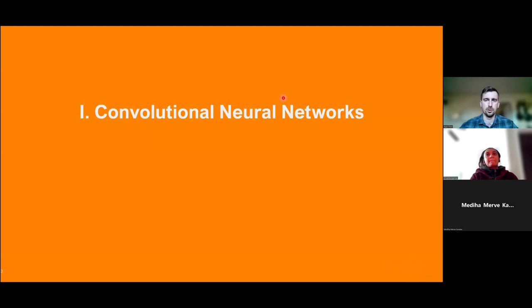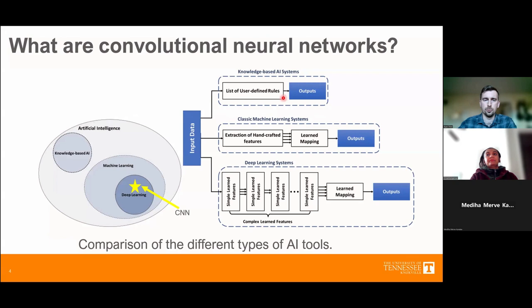So first, start with convolutional neural networks in general. Convolutional neural networks are one of a subtype of many different types of artificial intelligence tools. These AI tools have varying degrees of complexity and different applications. On the simpler side, knowledge-based AI systems simply take a list of user-defined rules and apply them to select input data to produce an output. More advanced machine learning systems can be told to extract explicit features from given data sets, thereby learning to map input data and produce an output. And then finally, deep learning systems, which includes convolutional neural networks, can be taught to extract many simple features and build complex relationships between them to identify specific phenomena in data subsets.